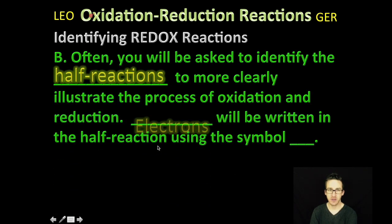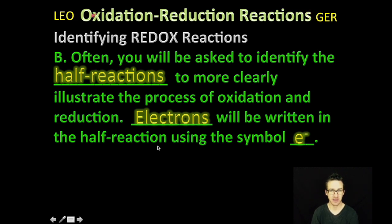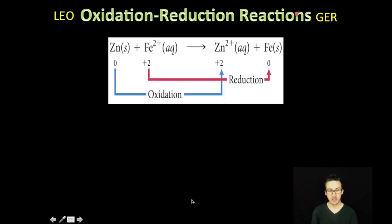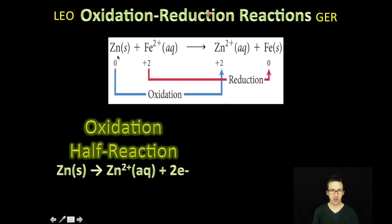Okay, and then just the last couple of things here. Often, you will be asked to identify the half reactions to more clearly illustrate the process of oxidation and reduction. And in those half reactions, you will see electrons being either gained or lost. And we will write them using the symbol with a little e, with a little superscript of the negative. So, for example, as you take a look at your notes, as you take a look at the screen in front of you there, we have got a redox reaction where something is losing electrons, oxidized, something gains electrons, reduced. So the oxidation half reaction here is going to focus on just the thing that is losing electrons.